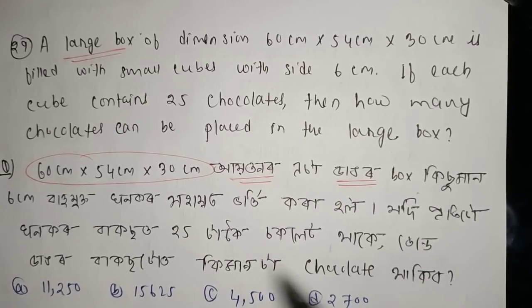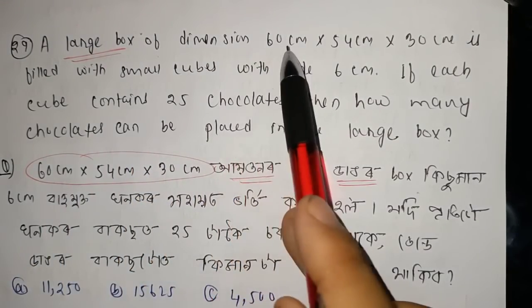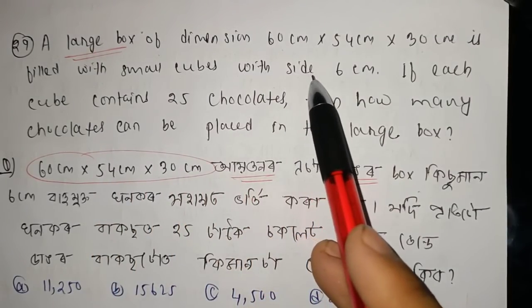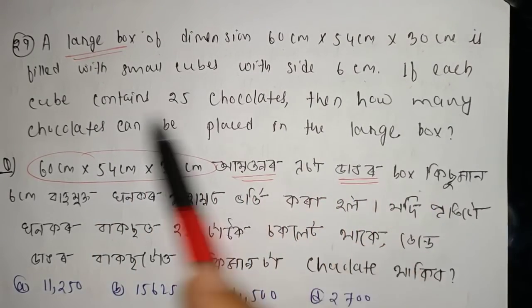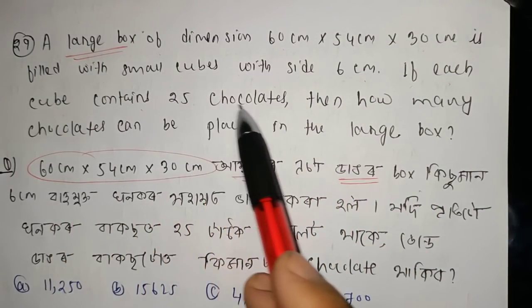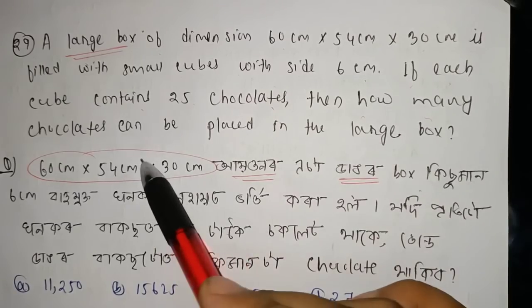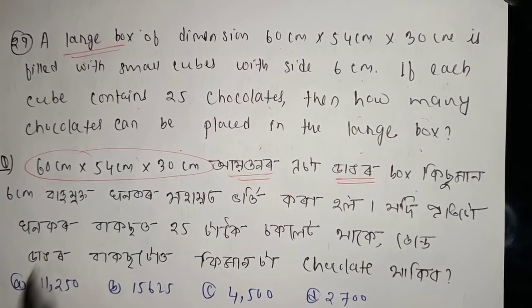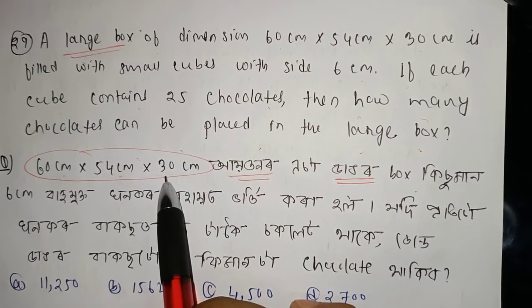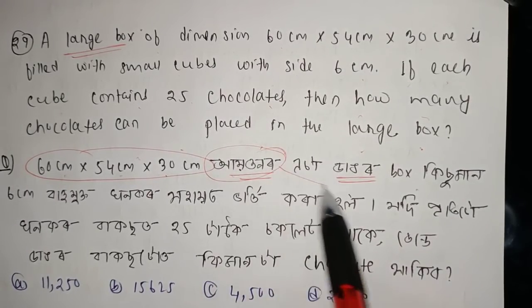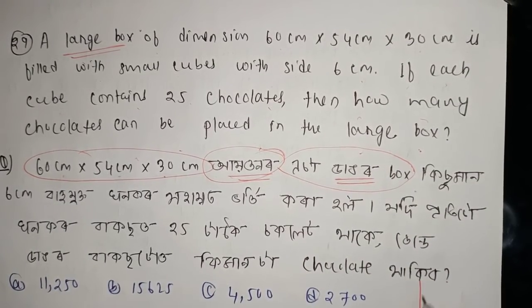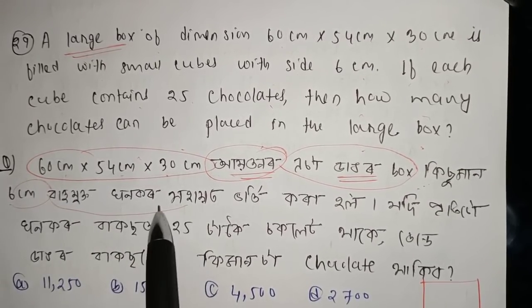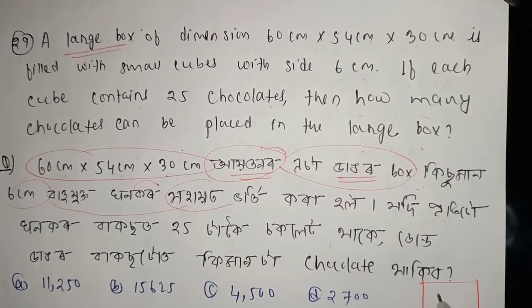This is a large box of dimensions 60 cm × 54 cm × 30 cm, filled with small cubes of side 6 cm. If each small cube contains 25 chocolates, then how many chocolates can be placed in the large box?